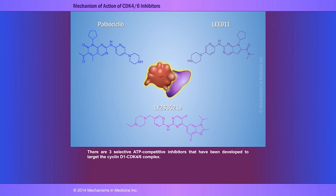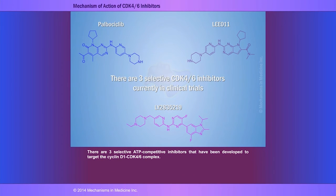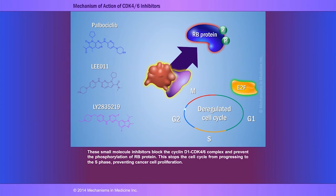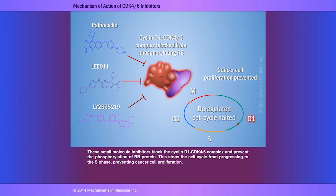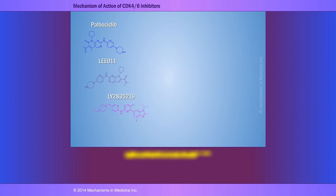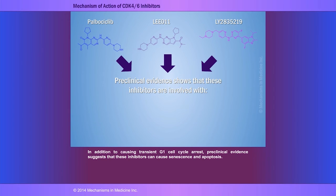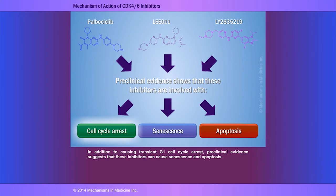There are three selective ATP competitive inhibitors developed to target the cyclin-D1-CDK4-6 complex. These small molecule inhibitors block the cyclin-D1-CDK4-6 complex and prevent the phosphorylation of RB protein, stopping the cell cycle from progressing to the S phase and preventing cancer cell proliferation. In addition to causing transient G1 cell cycle arrest, preclinical evidence suggests that these inhibitors can also cause senescence and apoptosis.